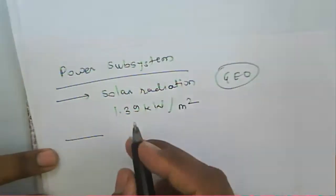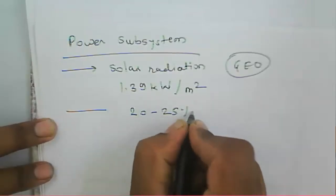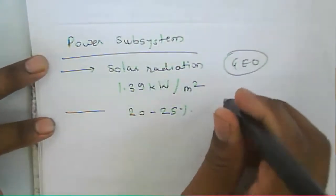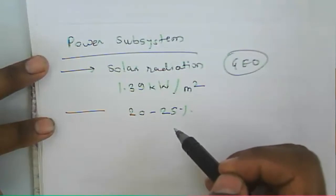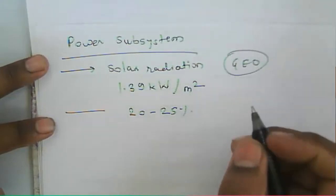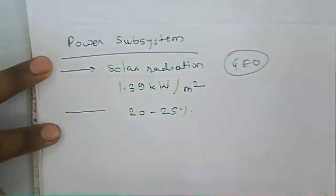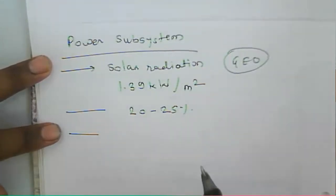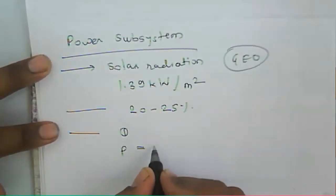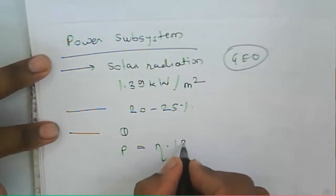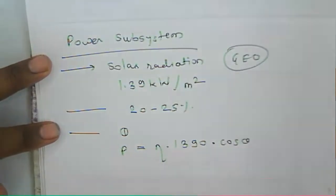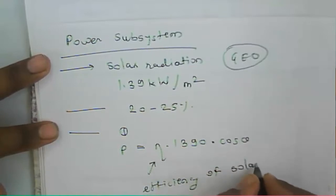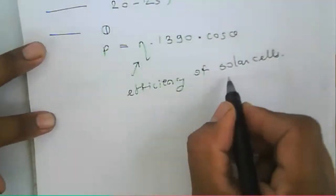Generally the solar panel works with an efficiency of 20 to 25 percent. If the sun rays fall perpendicular to the solar panel, maximum power is generated. However, if the sun rays fall obliquely at an angle theta, the power generated is P = η × 1390 × cos(θ), where η is the efficiency of the solar cell.